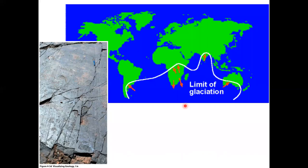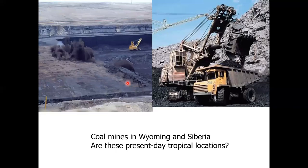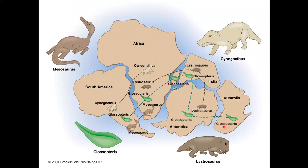The glacial striations show scratch marks in rocks of South America, India, and Australia seeming to indicate glaciers moved from the ocean onto land — which we know is impossible. Wegener said it's possible if you put all those landmasses back together: the glaciers were just moving from the adjacent landmass. He also pointed to coal mines presently in Wyoming and Siberia. Coal forms in swampy tropical environments, and Wegener said Wyoming and Siberia used to be tropical and swampy.